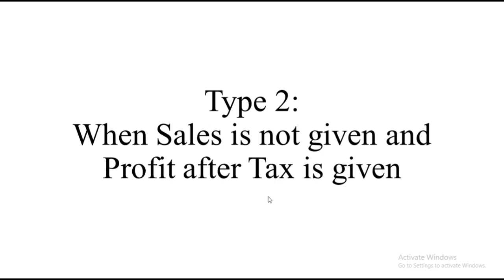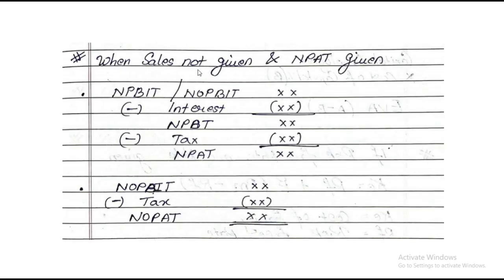The second type of sum is when sales is not given and Net Profit After Tax is given directly. The format required is: Net Operating Profit Before Interest and Tax, less Interest = Net Profit Before Tax, less Tax = Net Profit After Tax. Also: Net Operating Profit Before Interest and Tax, less Tax = Net Operating Profit After Tax. These two formats are needed to find EVA when sales is not given.